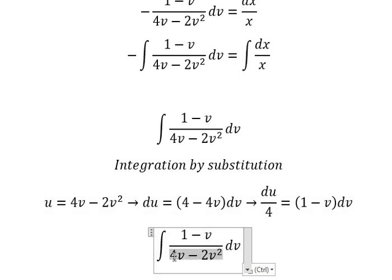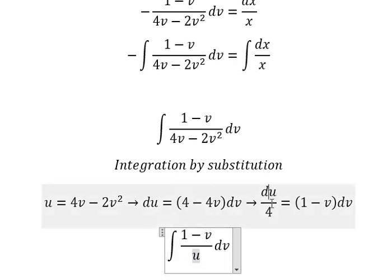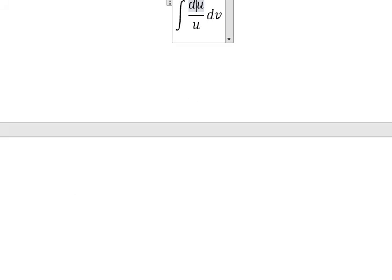So 4v - 2v² we change by u, and (1 - v)dv we change by du/4. After integrating, we have (1/4)ln|u| plus c.